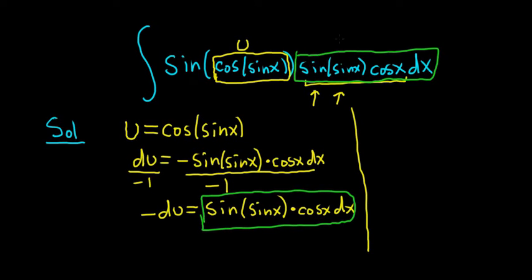So that's negative du. We can pull out the negative sign and we're simply left with the sine of u du. We can actually leave the negative sign in, which is more beneficial because this is negative sine u.